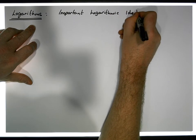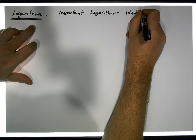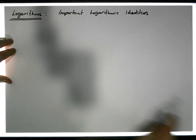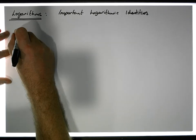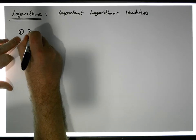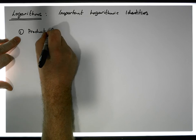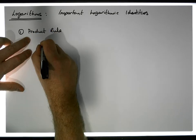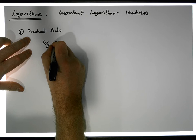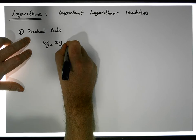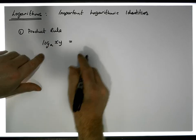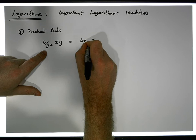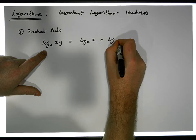The first identity which is important for us is the product rule. The product rule says that the log of x·y to the base a is simply equal to the sum of the logarithms — the log of x to the base a plus the log of y to the base a.